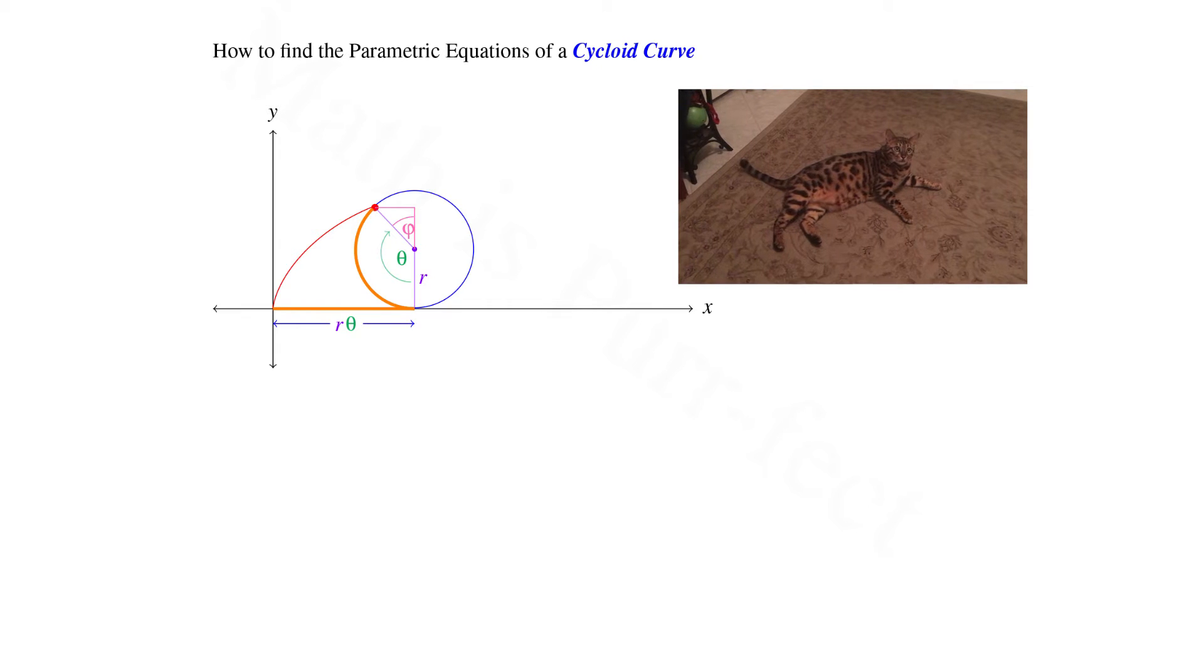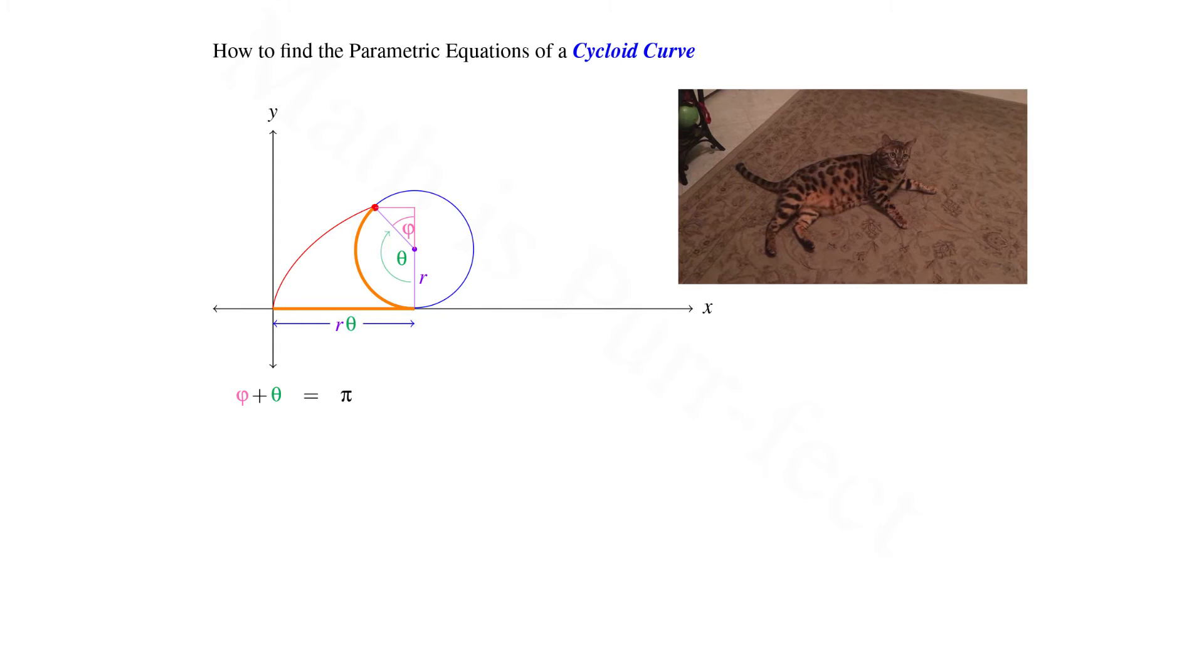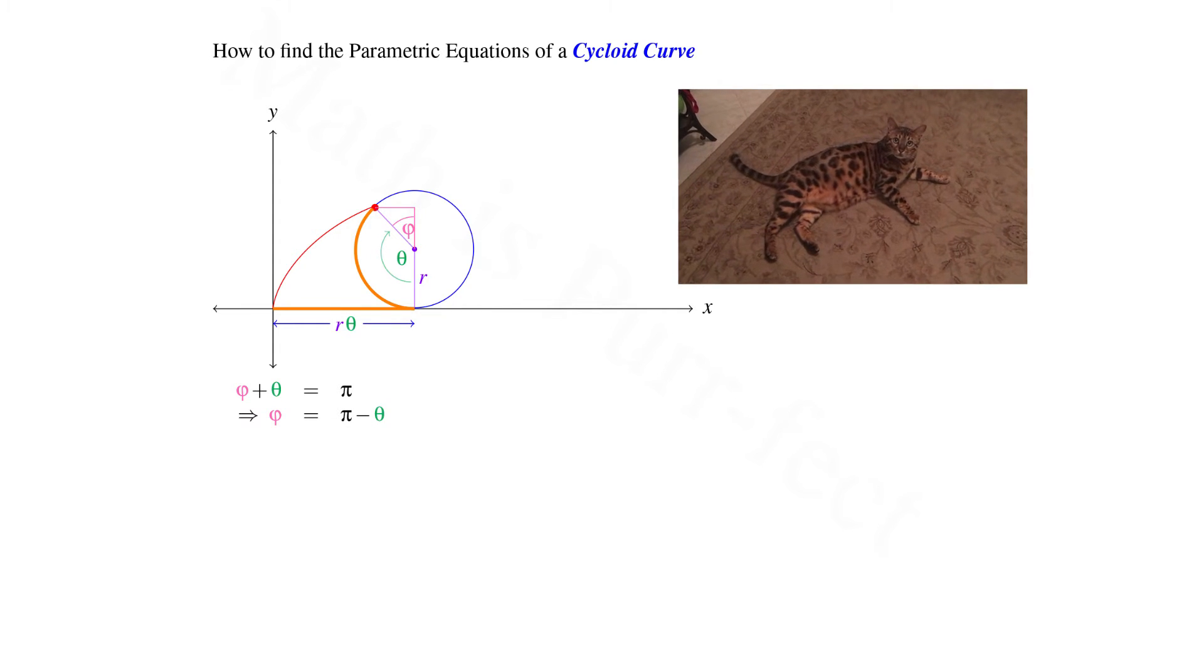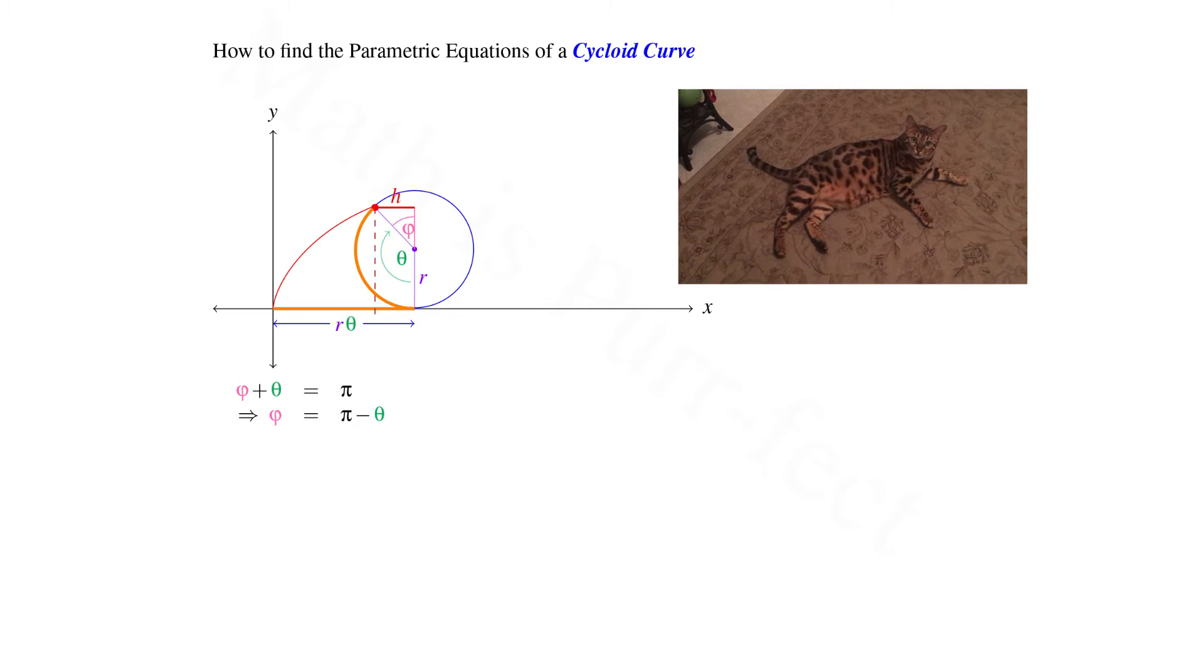Because supplementary angles sum to pi, we have that theta plus phi is pi radians. Hence, phi is pi minus theta. Let's denote the distance from the center of the circle to that point on the cycloid by h.